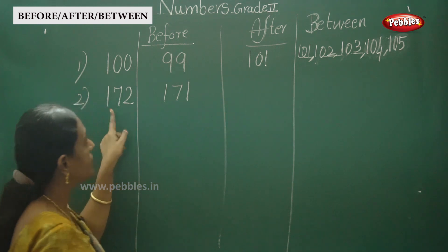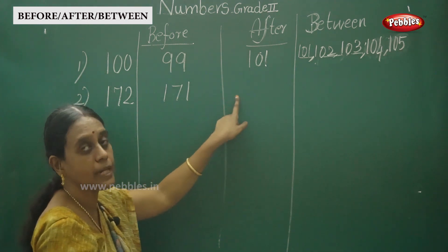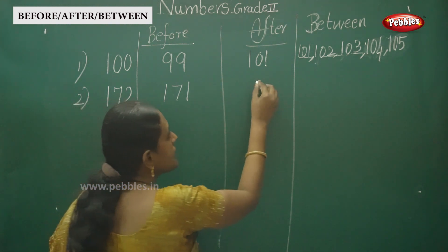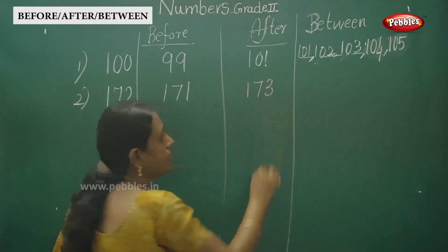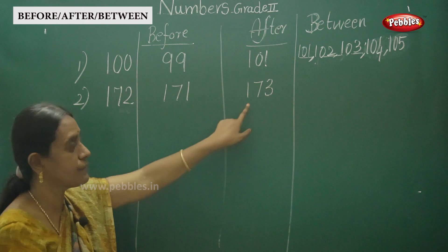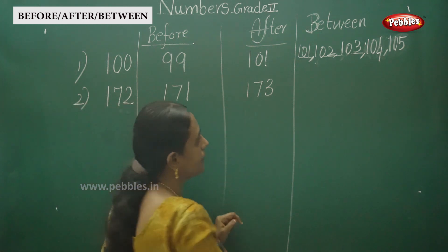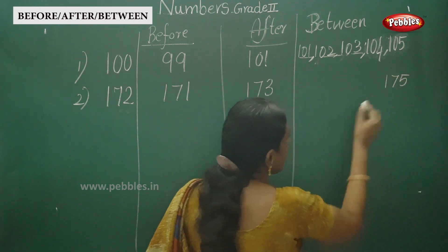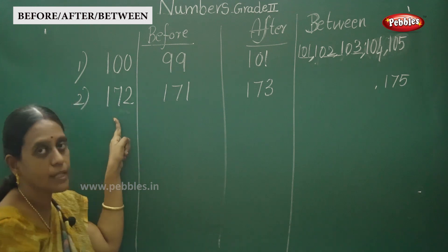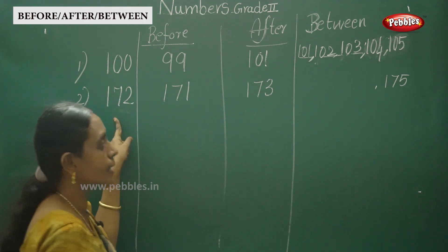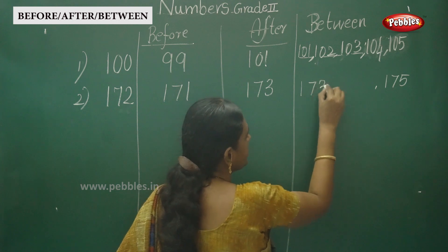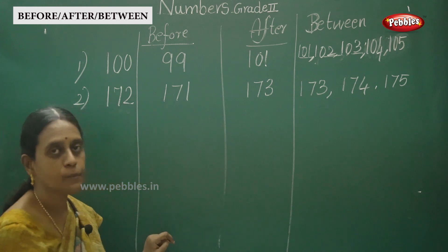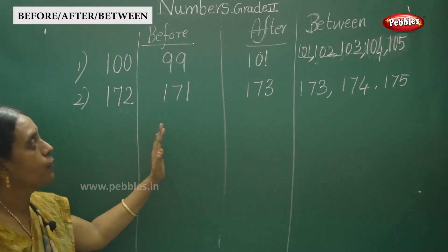Next, the after number: after one hundred and seventy two is one hundred and seventy three. For between numbers — here the question is 172 to 175. Between them: 173 and 174. This is the way to write before, after and between.